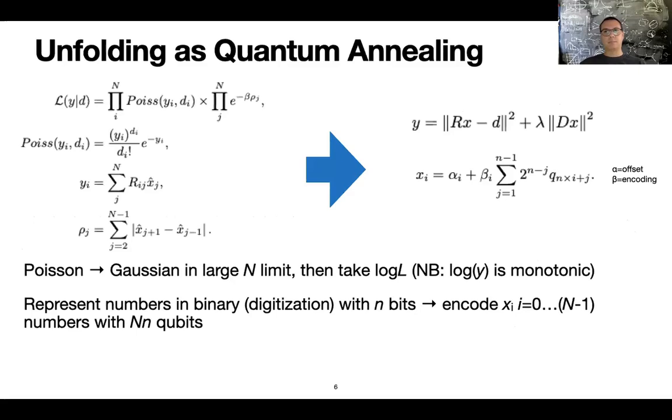Also, you generally deal with floating point numbers, but then you can digitize these numbers by expanding them in a binary format. And so you need a binary format because the solution has to be found as a function of a string of qubits. So in the end, you will have a solution that is basically encoded by a number of qubits that is the number of qubits that you use to encode each bin times the number of bins.